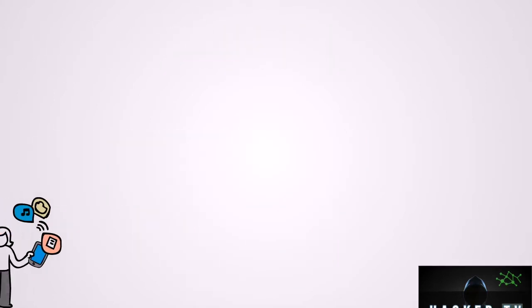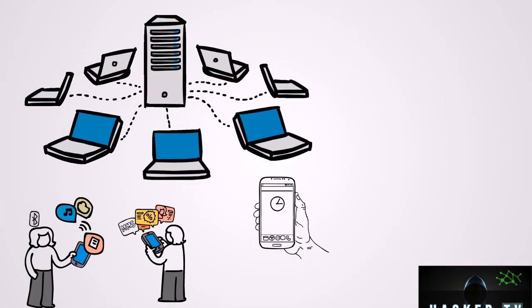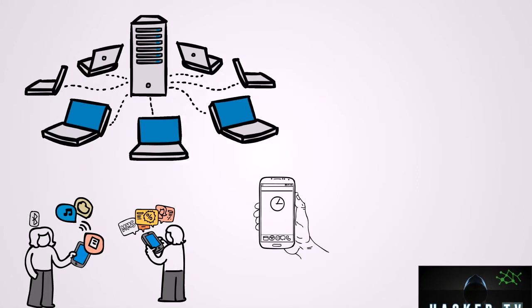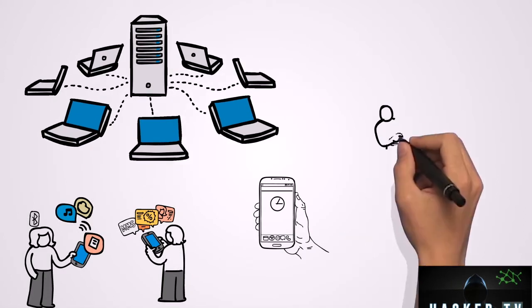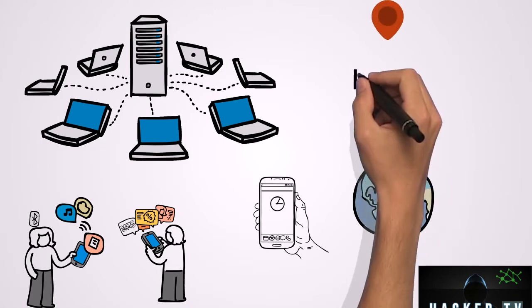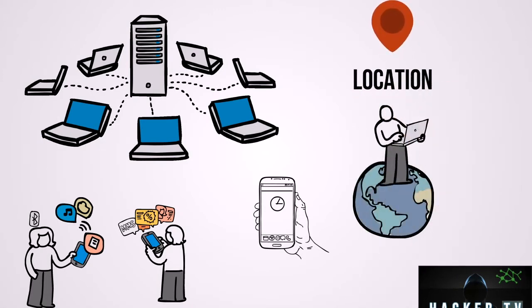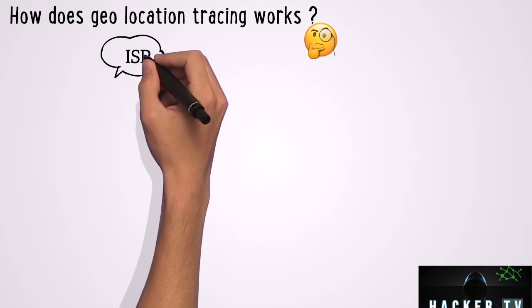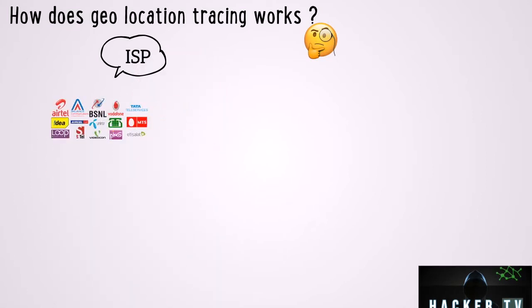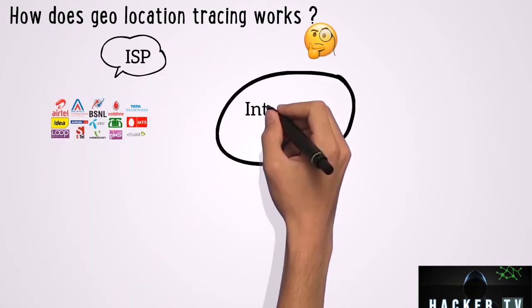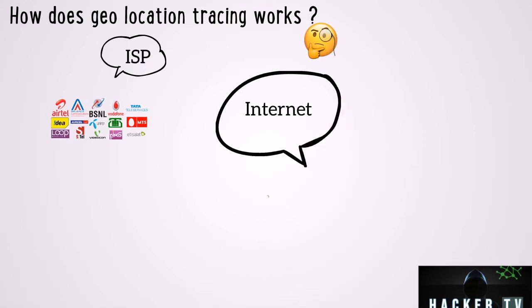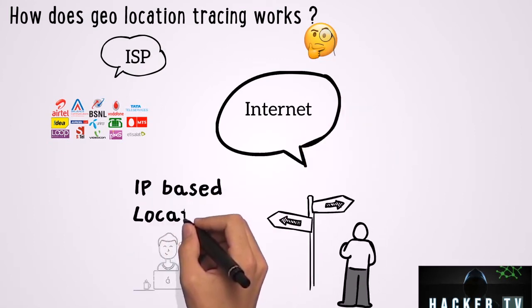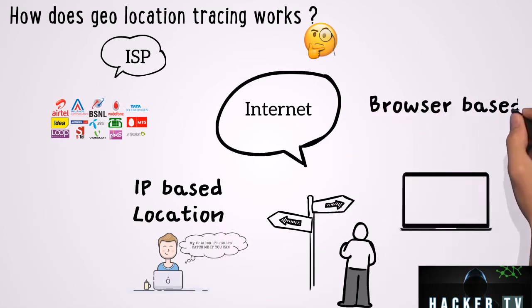All of us have a smartphone or a computer system that is connected to the internet. Each device connected to the internet also has a geolocation — that is, the location from which the person is using his phone or computer. There are two major ways to do this: one is via the ISP, to which all the phones are connected through a cellular network; another one is internet-based, which can be further broken down into IP-based location and browser-based location.